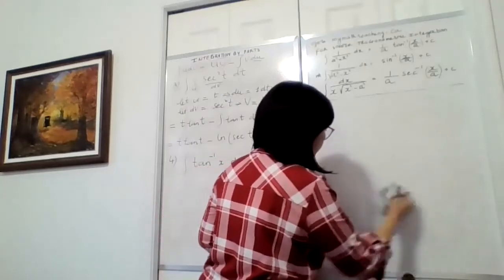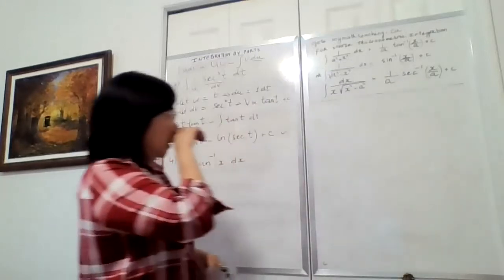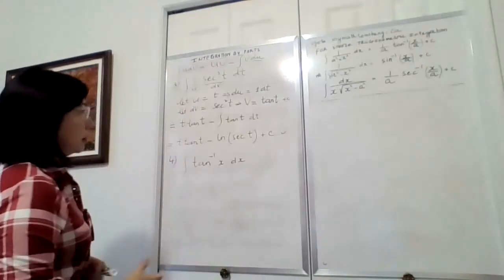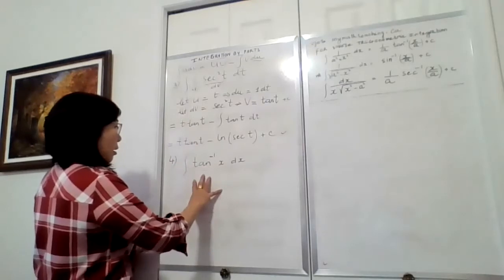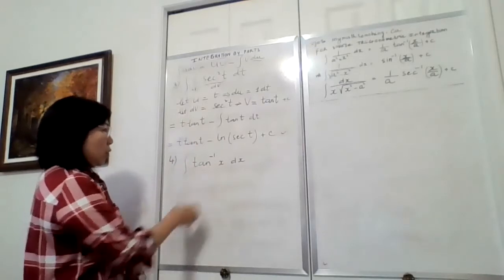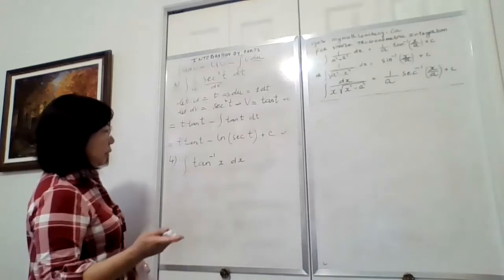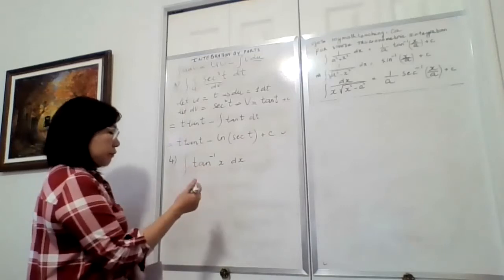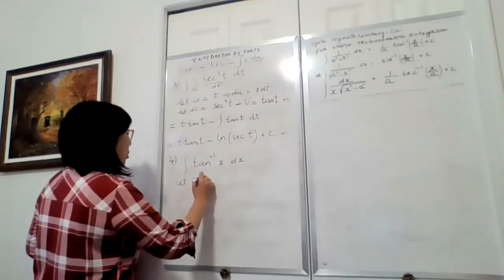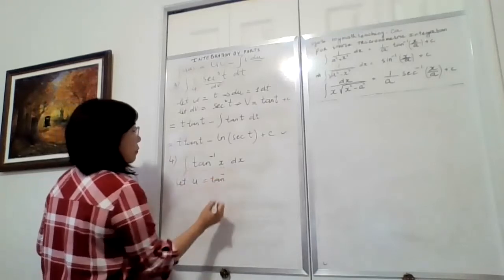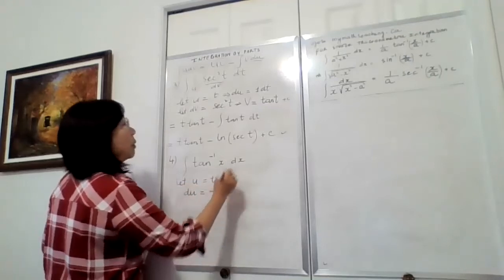Let me erase the board so we have room. When we only have one function, we can still apply integration by parts. The reason we use it here is because this function is an inverse trigonometric function, so it's a little bit complicated. So I'm going to say let u equal arctan(x), and let dv equal 1·dx.